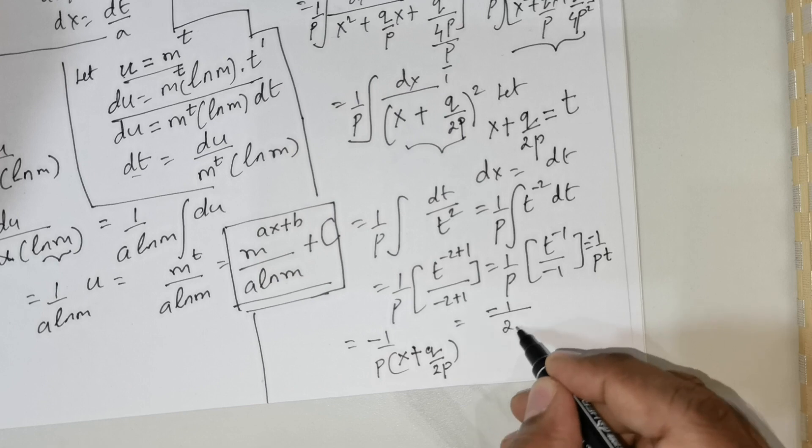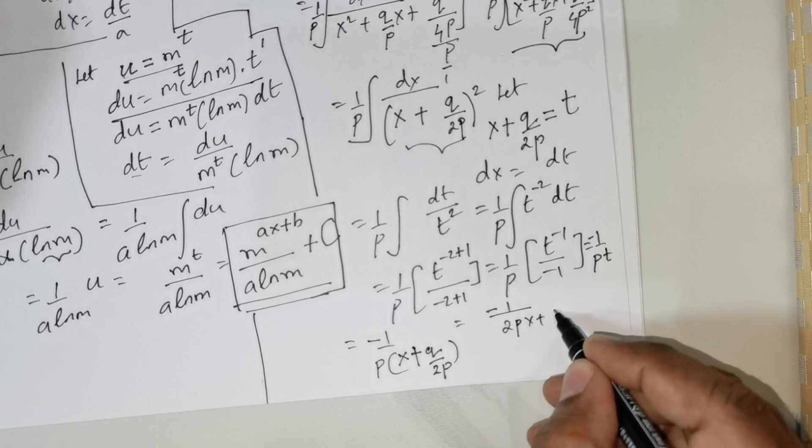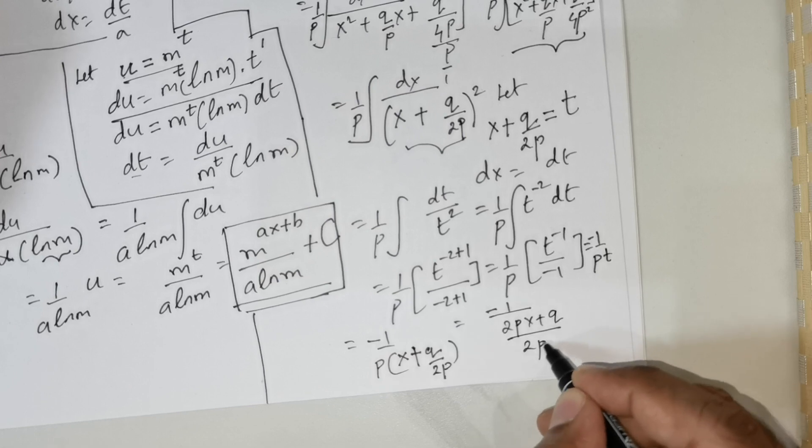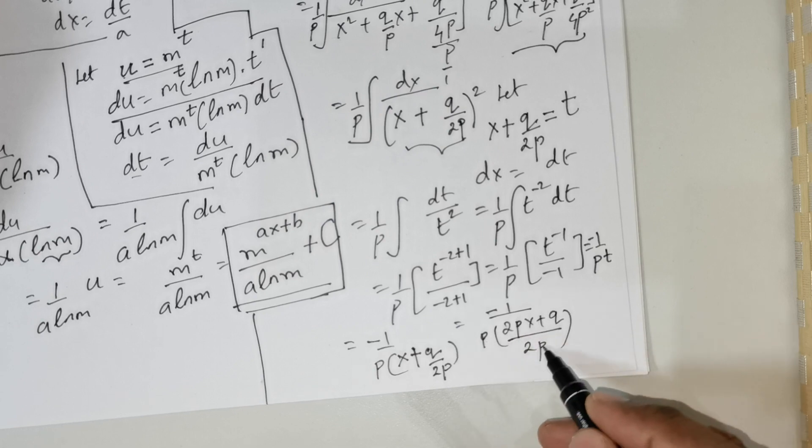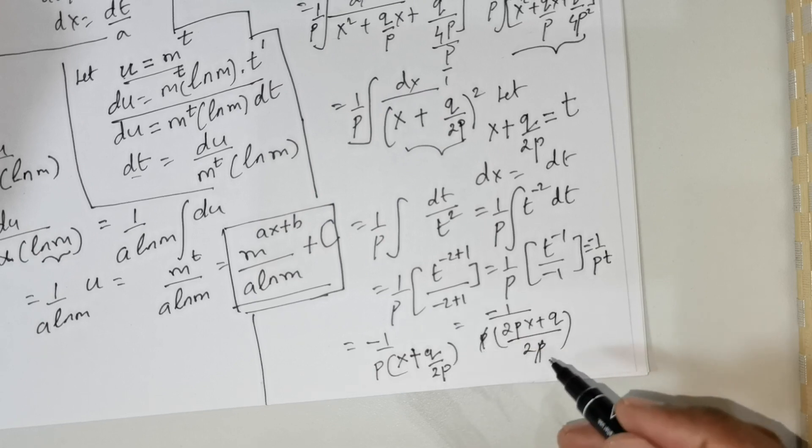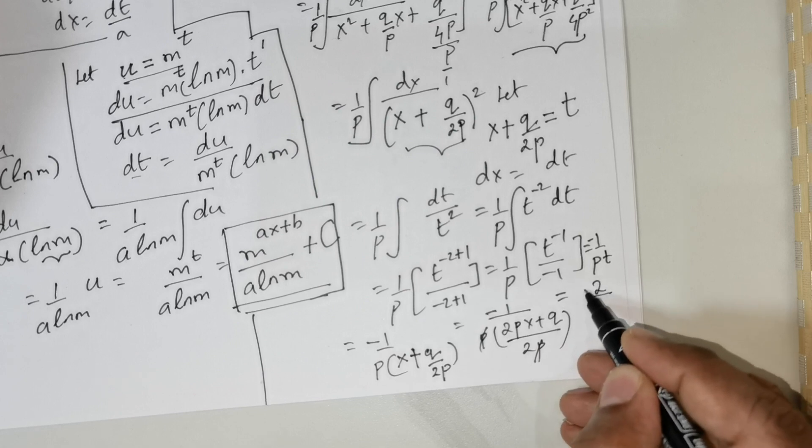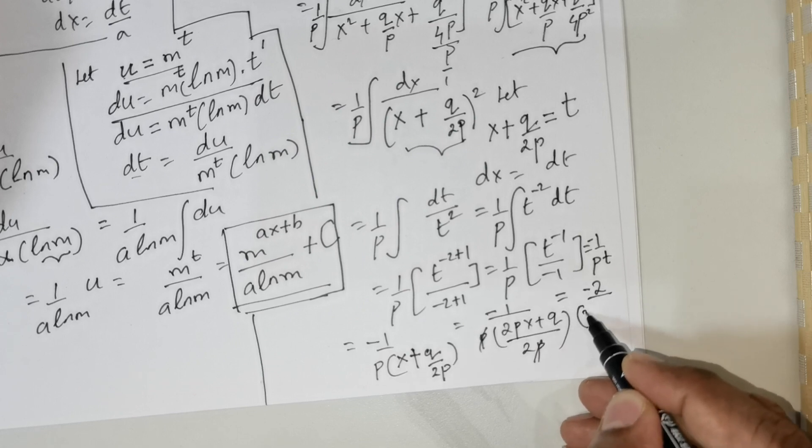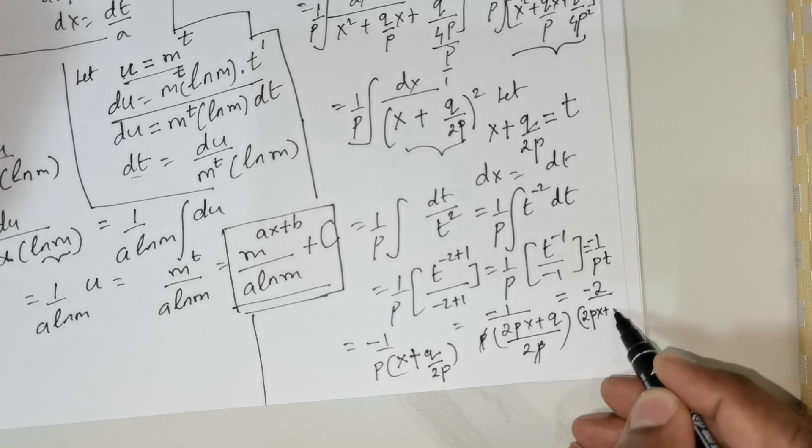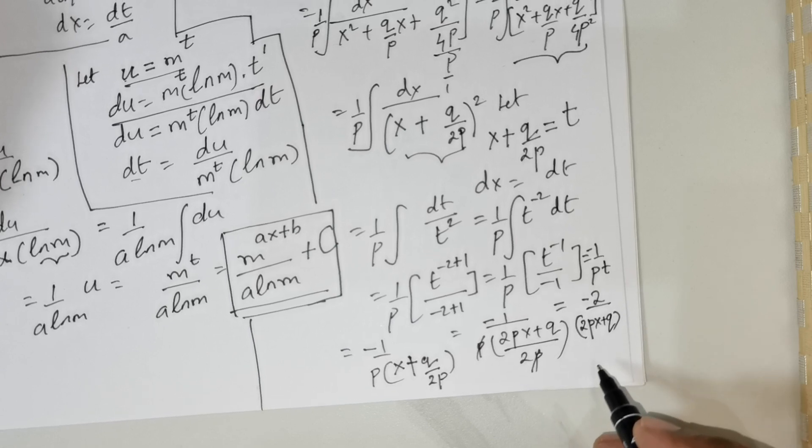Now you can take the LCM as 2p. If you were to take the LCM as 2p, this is going to be 2px plus q divided by 2 times p. This is multiplied with p. Now p and p can be cancelled. You can push this to the numerator. That's going to be negative 2 divided by 2px plus q.